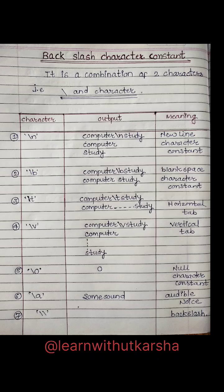Backslash B is a blank space character constant. If we need space, we use it. Backslash T is a horizontal tab — if we need more spacing between two words, we use Backslash T. Backslash V is a vertical tab.